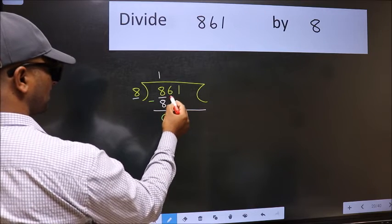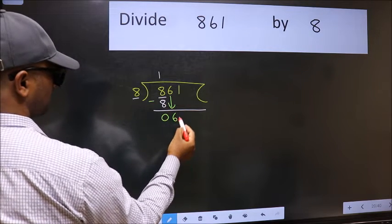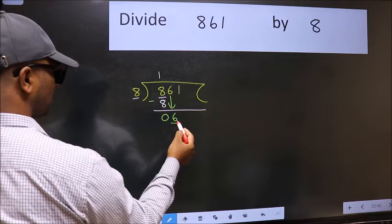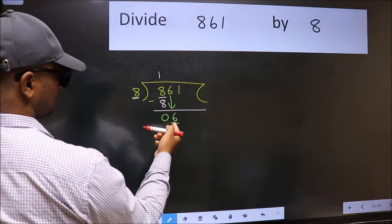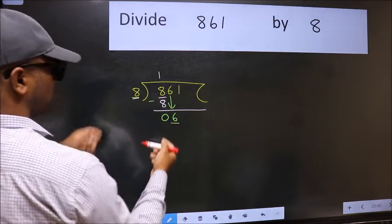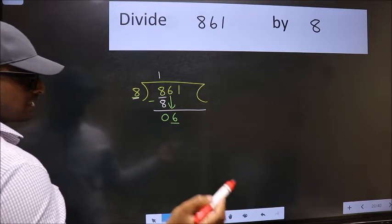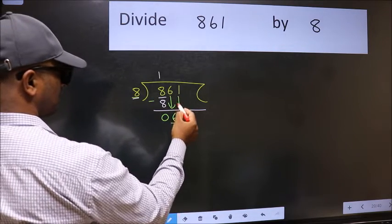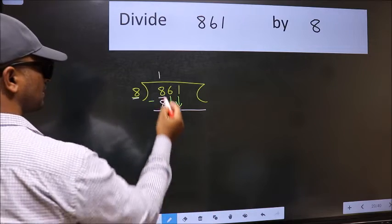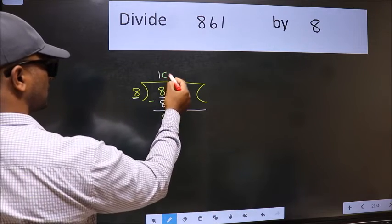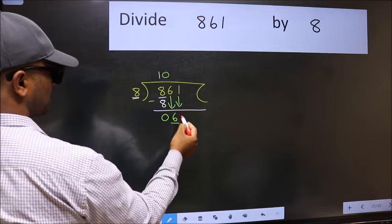After this, bring down the beside number. So, 6 comes down. Now here we have 6 and here 8. 6 is smaller than 8, so we should bring down the second number. The rule to bring down the second number is we should put 0 here. Then only we can bring this number down.